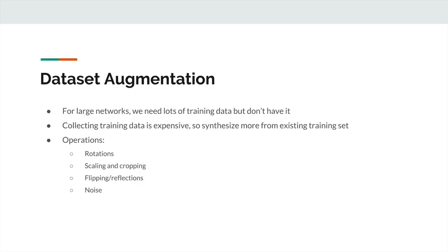Let's take a second to talk about dataset augmentation. If you have a very large neural network, you need to give it lots of training data, because the more parameters you have, the more data you need to figure out what those parameter values should be. You might not have a ton of training data to begin with, and you might run into issues where you have a lot of parameters but not enough data.